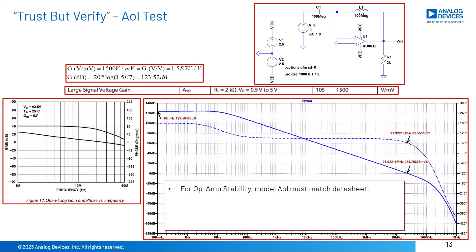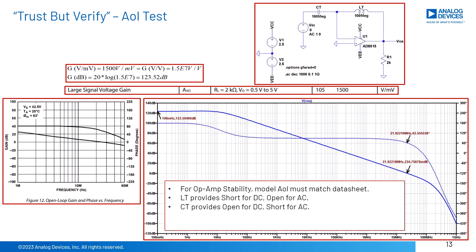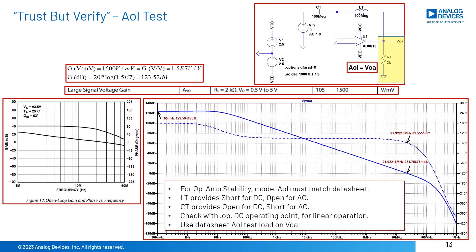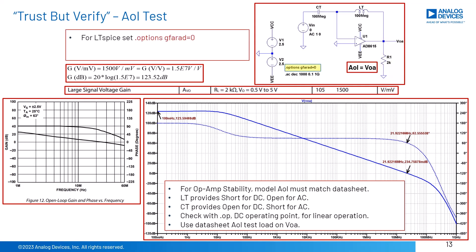Op-amp stability analysis simulations must use macromodels whose AOL matches the datasheet. For any op-amp macromodel, trust but verify that the AOL is correct when compared to the datasheet using this test circuit. At DC, inductor LT is a short and capacitor CT is an open — check the DC operating point with a dot-op simulation to ensure inputs and output are in the linear operating region. For AC, capacitor CT is a short and inductor LT is an open, so the op-amp AOL is measured as VOA. Include R1 or whatever other load is at the output from the datasheet test conditions for AOL. For LTSpice, ensure dot options GMIN equals 0 is used to eliminate any DC current in capacitor CT, which would give an incorrect DC operating point.